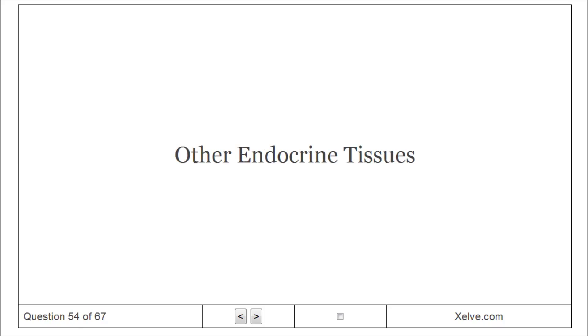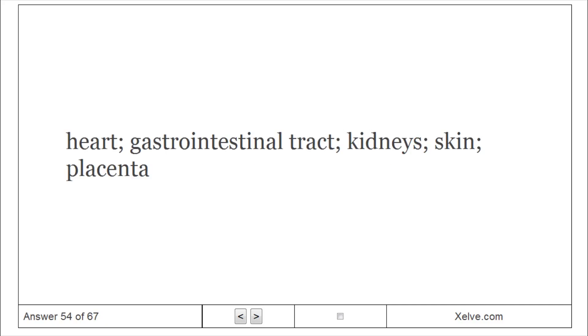Other endocrine tissues: heart, gastrointestinal tract, kidneys, skin, placenta.